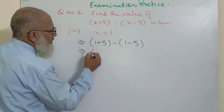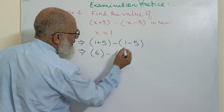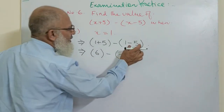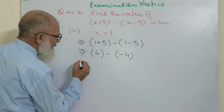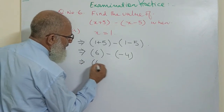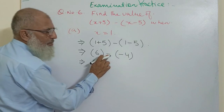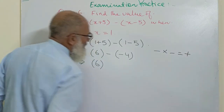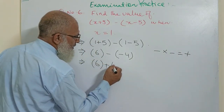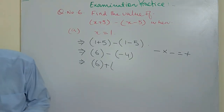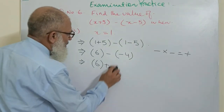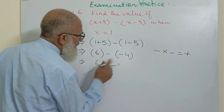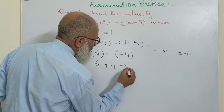It will become 6, minus, minus 4. The negative term is greater, so we have to write minus sign. It will become 6, and this is minus and minus — minus times minus gives us plus — so it becomes plus 4. So 6 plus 4 is equal to 10.